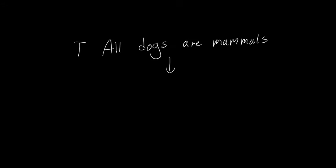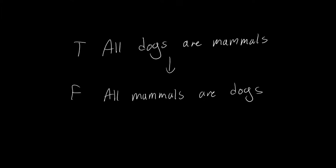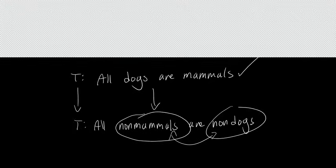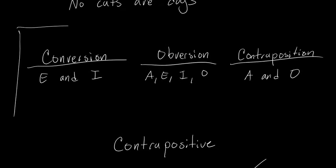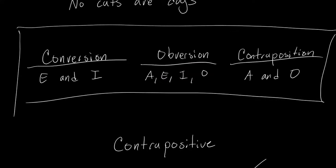Let's take one that doesn't work. Here's the converse: 'all dogs are mammals' is true, but its converse 'all mammals are dogs' is false. So conversion does not work on A-type or O-type statements — it only works on E-type and I-type. And contraposition only works for A-type and O-type statements. It's really important to keep that in mind. Obversion works for all of them: A, E, I, and O.